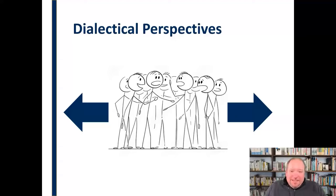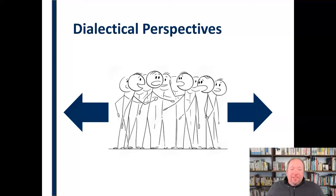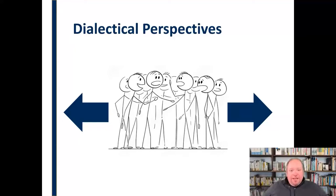We need to understand that these dialectical perspectives exist — they're an important aspect of examining our relationships. First, acknowledging that those things exist, not just for us but for other people as well. And then putting into perspective how we can best manage these things when they come up — it's not about totally ignoring them, but managing them in the best way possible, which will vary from relationship to relationship.